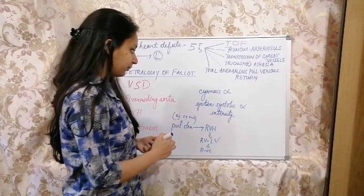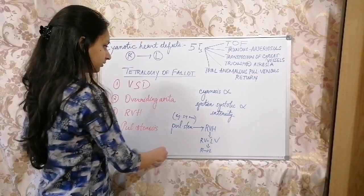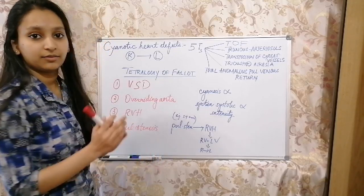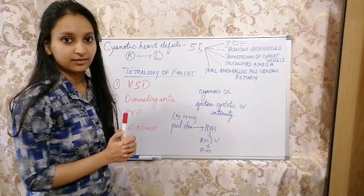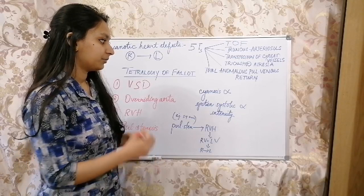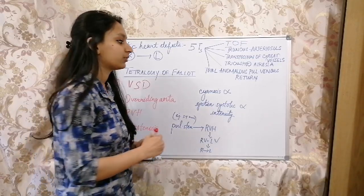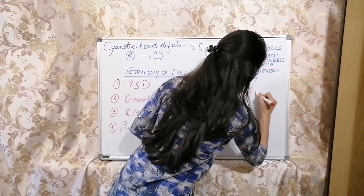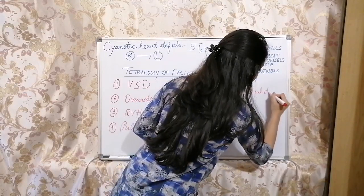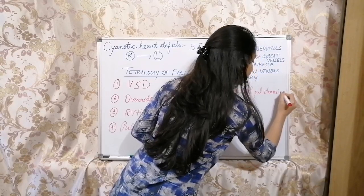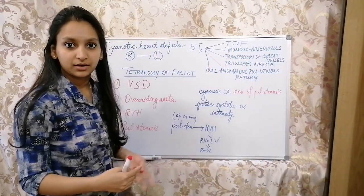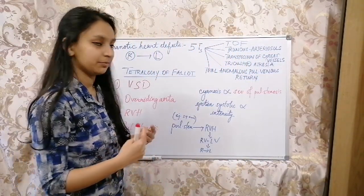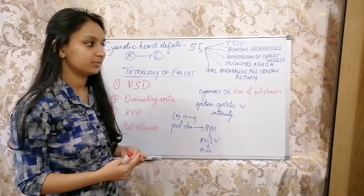When it comes to the points you have to keep in mind, this is a cyanotic heart defect. Cyanosis will be seen, but cyanosis is directly proportional to severity of pulmonary stenosis. If there is more pulmonary stenosis, the baby will be appearing more blue in color, more cyanosis will be seen.